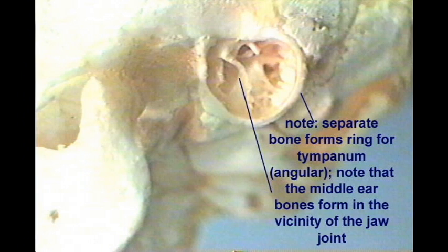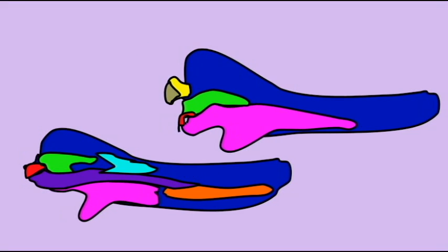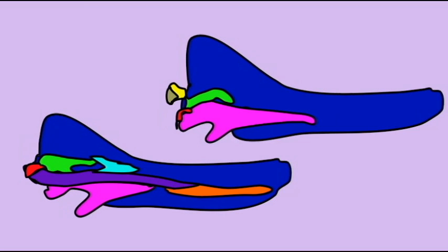In marsupials, embryos are born with these bones in the jaw, only later do they migrate to the ear.